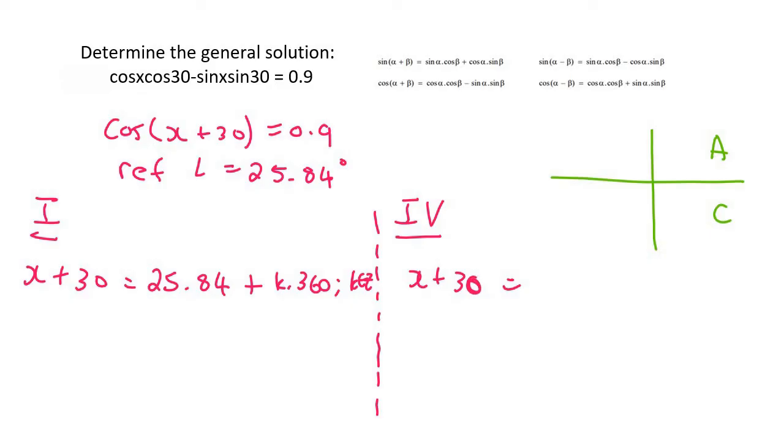Now on quadrant four, at quadrant four we would say 360 minus, because that's what quadrant four says, and then we're going to say the reference angle, so that's going to be 25.84 plus k times 360, k is an element of z.